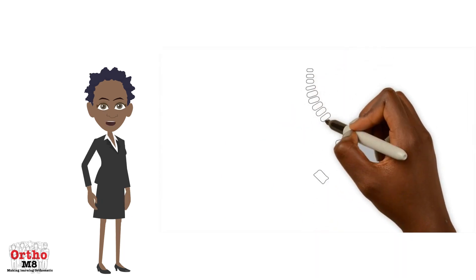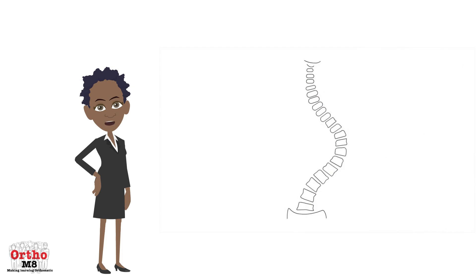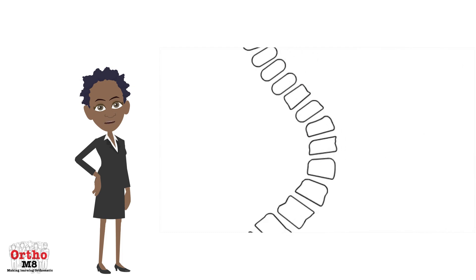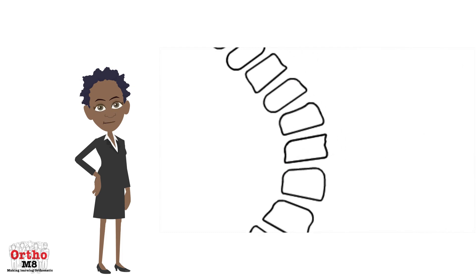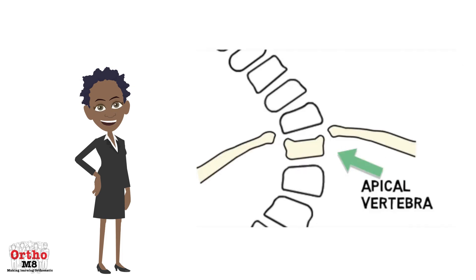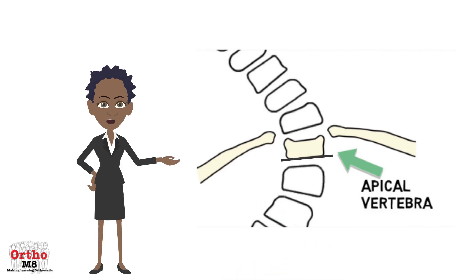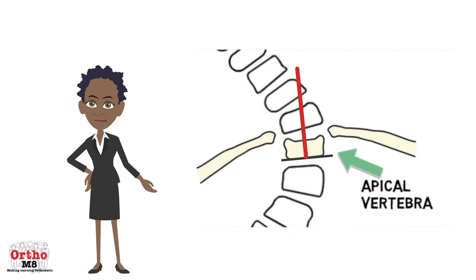When faced with a scoliosis, first find the apical vertebra. Then draw a line parallel to the bottom of the apical vertebra, and next a line perpendicular to this.